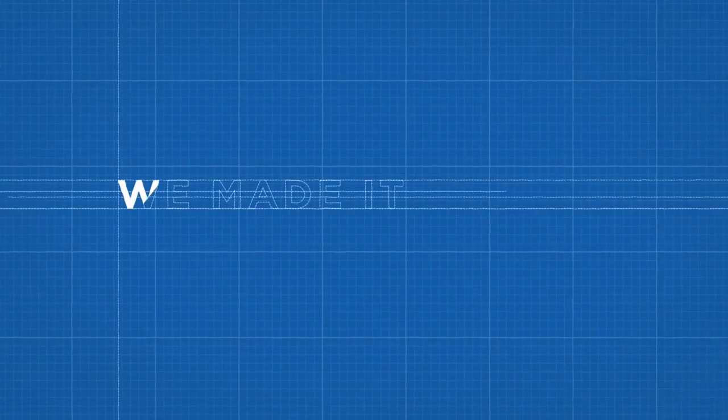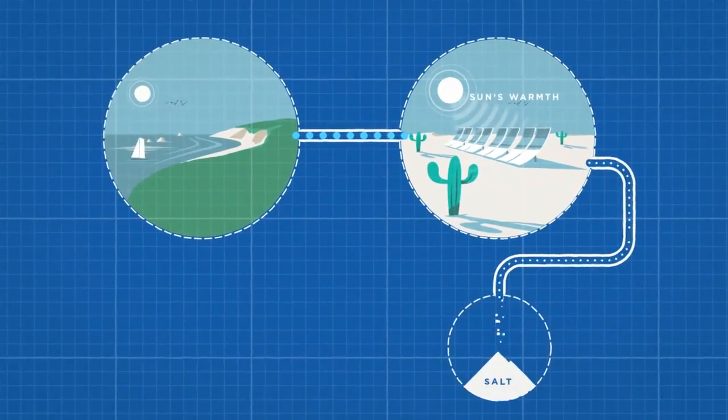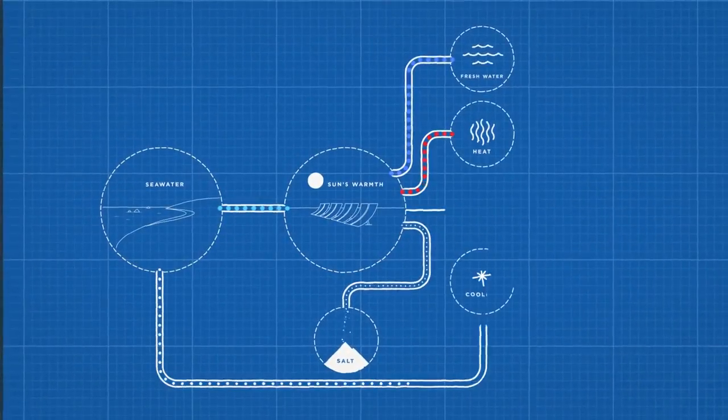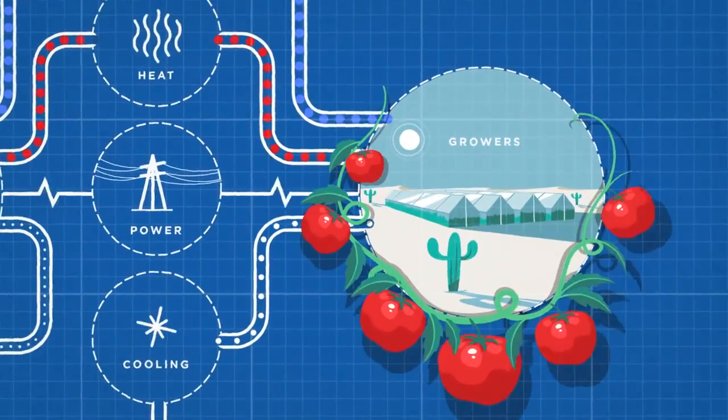We wondered too. Then we made it happen. We use the sun's warmth to take the salt out of seawater and bring heat, cooling and power to our growers so that we can produce delicious fruits and vegetables.